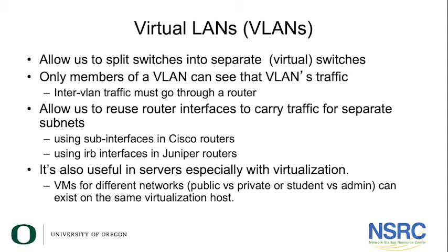In Cisco routers, you do this using sub-interfaces. In Juniper routers, you do this using IRB interfaces. It is also useful in servers, especially with virtualization. Virtual machines for different networks — for example, public vs. private or student vs. administration — can be created and exist on the same physical virtualization host.